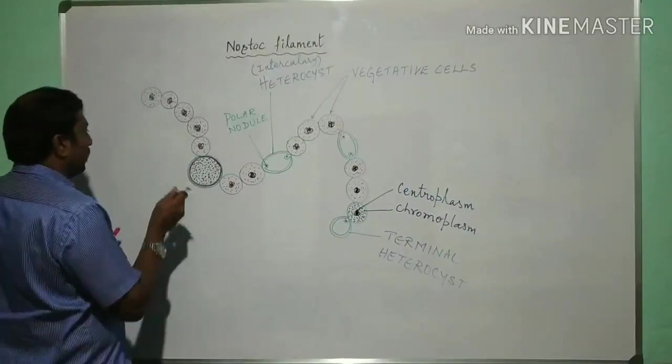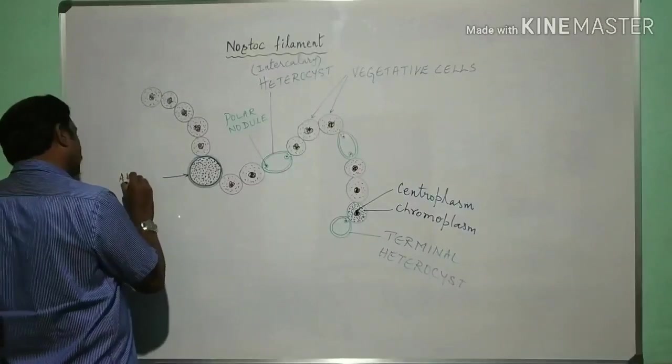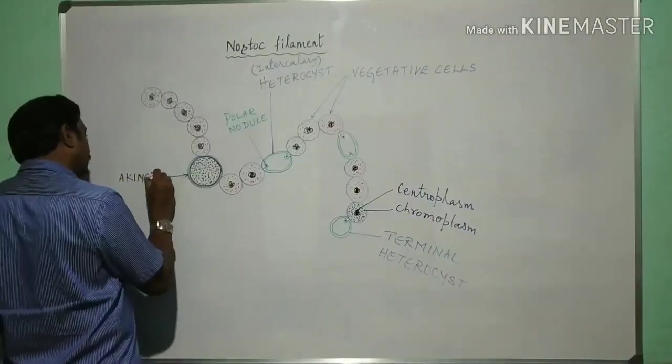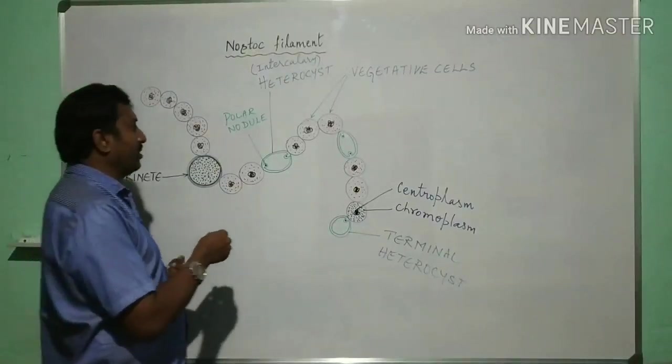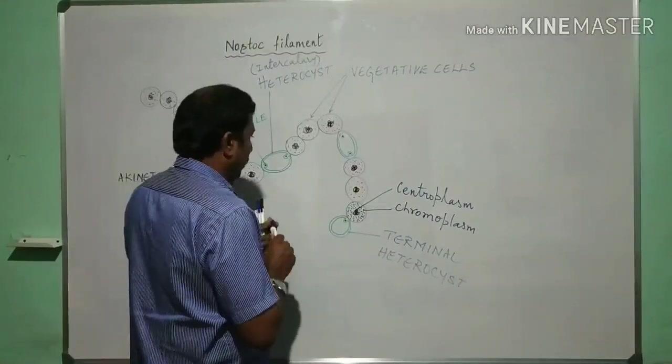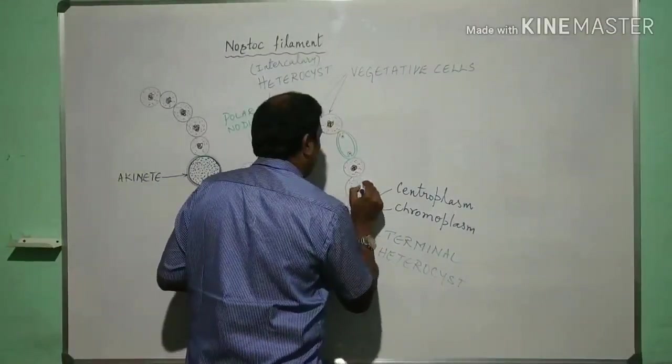And these thick walled cells are called akinase, singular akinete, and you can draw few towards blue colours.